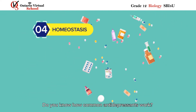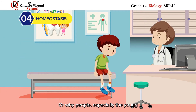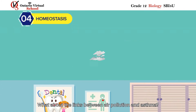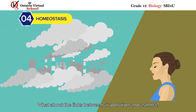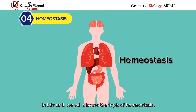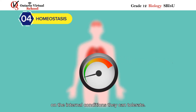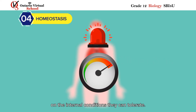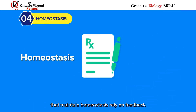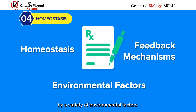Homeostasis. Do you know how common antidepressants work? Or why people, especially the young, should be carefully monitored when on these kinds of medications? What about the links between air pollution and asthma? In this unit, we will discuss the topic of homeostasis, where you will learn that all organisms have strict limits on the internal conditions they can tolerate. We will also examine how all systems that maintain homeostasis rely on feedback mechanisms, which can be affected by a variety of environmental factors.